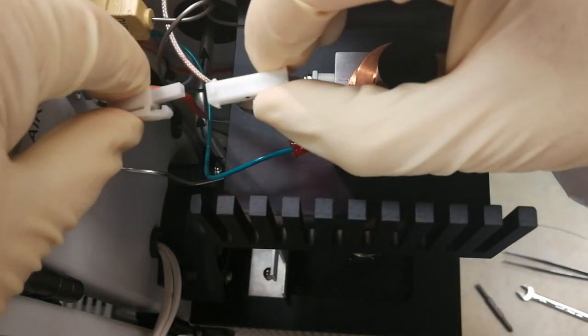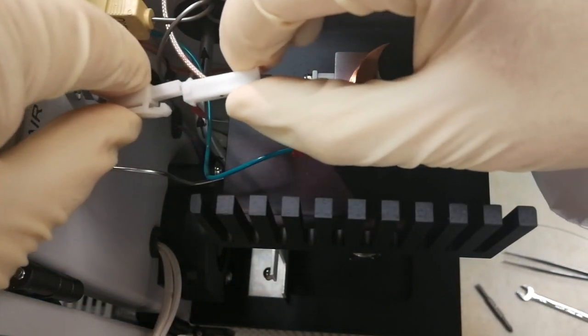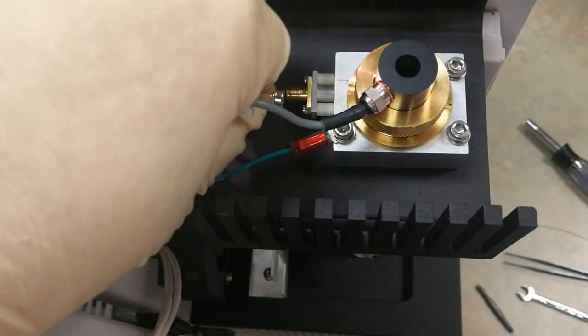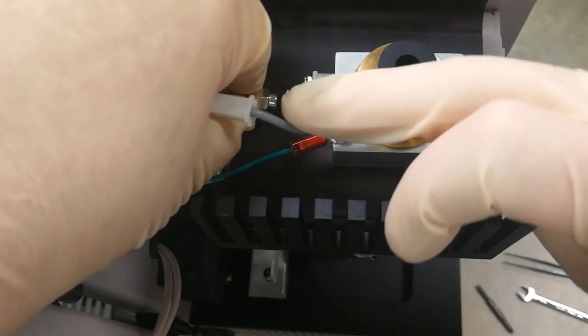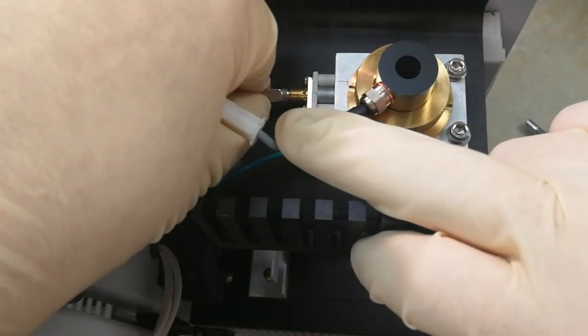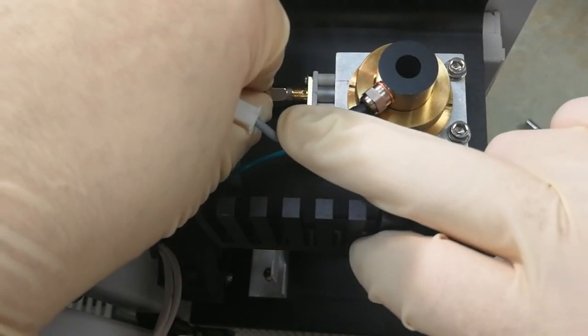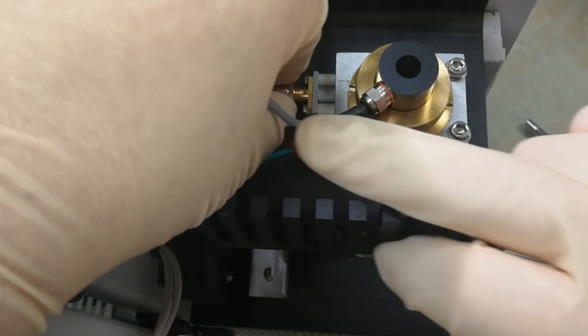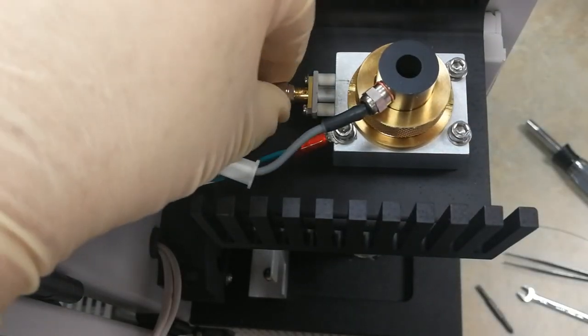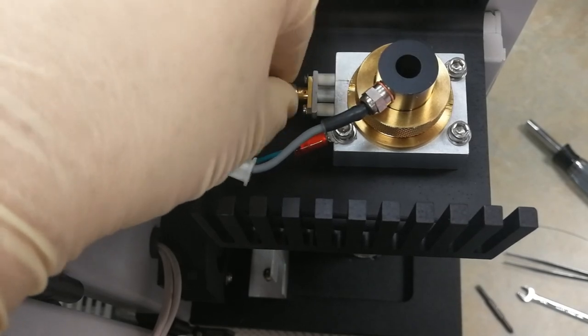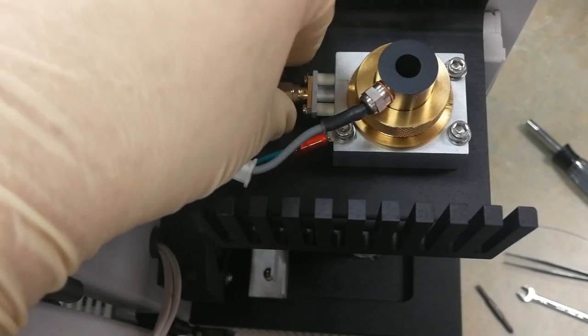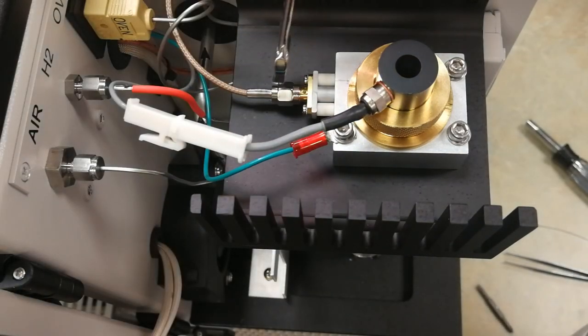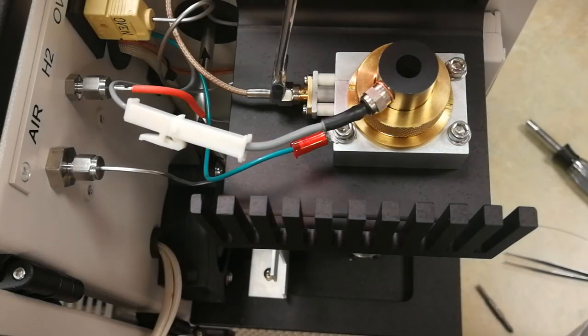Reconnect the igniter wire. Bring the FID signal cable back in. Make sure the little pin doesn't get bent. Reinsert it. Take your 5/16 wrench and just give it a little bit of a tighten. You don't want to crank down on this.